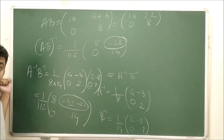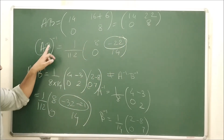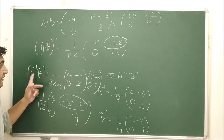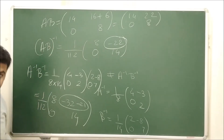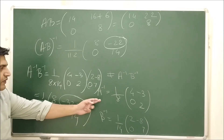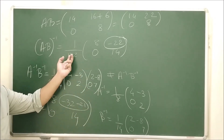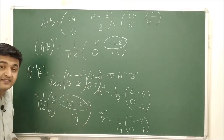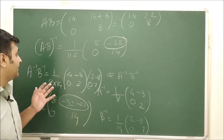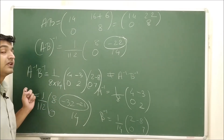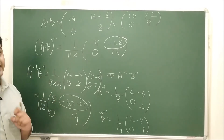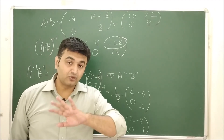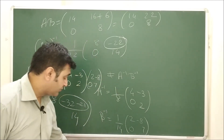As you can see, (AB)⁻¹ is not equal to A⁻¹B⁻¹. If you compute B⁻¹A⁻¹ you will get the correct answer. So this is a counter example showing that AB⁻¹ is not equal to A⁻¹B⁻¹ in general. Now let's go to the group theory part.